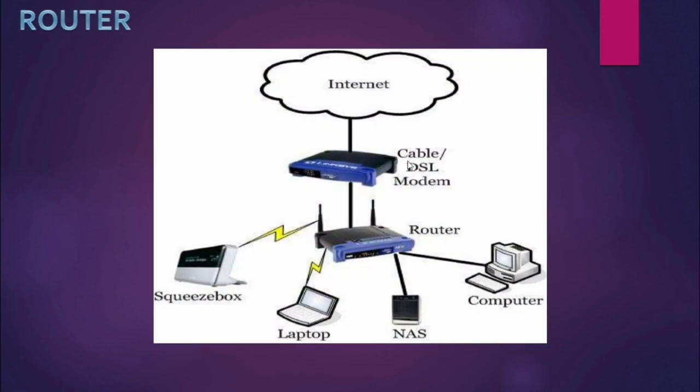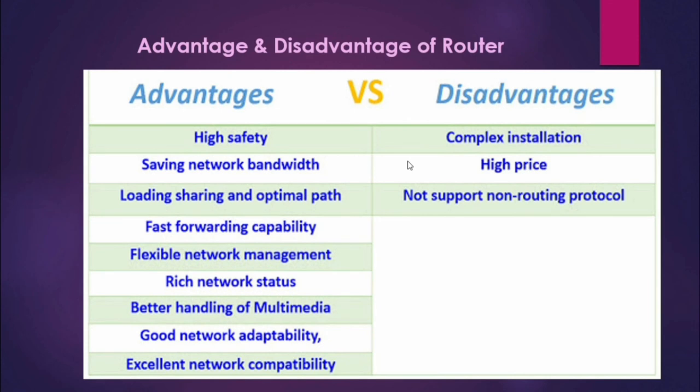In this pictorial diagram, the internet is connected with a router, and our router is connected to local devices like a computer, NAS, laptop, and a Squeezebox — multiple devices we can connect with our router to use the internet at home, office, or anywhere else, because the router is a wireless device.